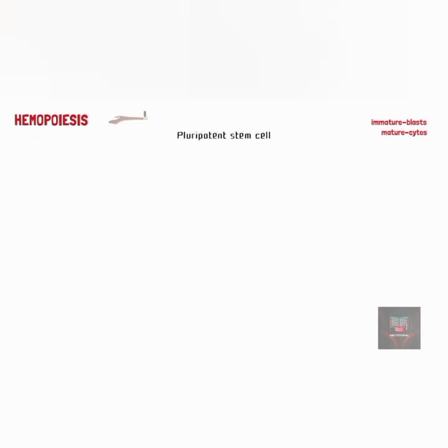Immature cells are generally referred to as blasts, while mature cells are referred to as cytes. The process of hemopoiesis starts from the pluripotent stem cells, also known as hemocytoblasts. In order to form blood cells, pluripotent stem cells in the red bone marrow produce two further types of stem cells, which have the capacity to develop into several types of cells. These stem cells are referred to as the myeloid stem cells and the lymphoid stem cells.